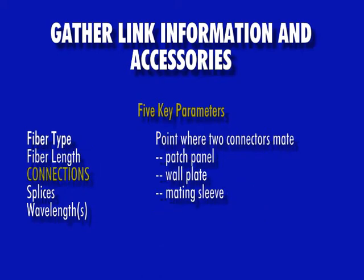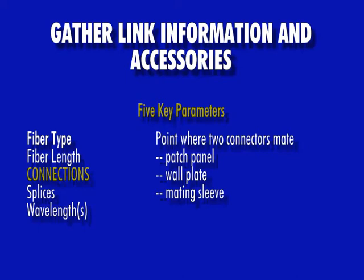Third is number of connections. A connection is the point where two fiber connectors mate together, such as in a patch panel, wall plate, or mating sleeve. Fourth is the number of splices, which can be either fusion or mechanical. For the purpose of calculating a link budget, most cabling standards do not distinguish between fusion and mechanical splices.